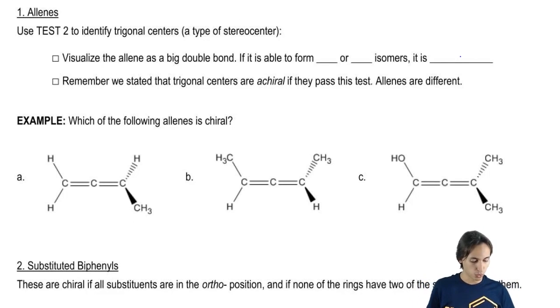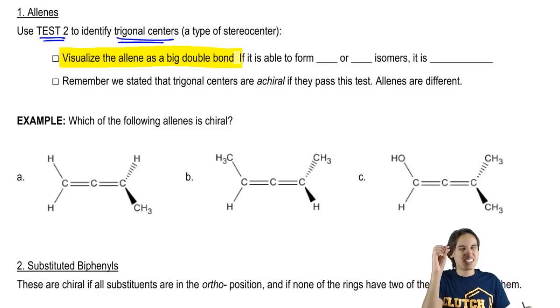So let's look at this. We're going to use a modified version of test two, which is the one for stereocenters, to identify trigonal centers in the allene. But you're going to say, okay, but there's two double bonds. Which one do I look at? Well, this is the ghetto part. We're going to visualize the allene as just one big double bond. Maybe squint a little bit and try to ignore the carbon in the middle and just pretend that it's one big double bond.